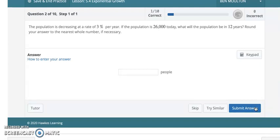For example, maybe this one. The population is decreasing at 3% per year. If the population is 26,000 today, what will it be in 12 years? Round your answer to the nearest whole number if necessary. Give me a second, let me get that set up and I'll explain what's going on here.